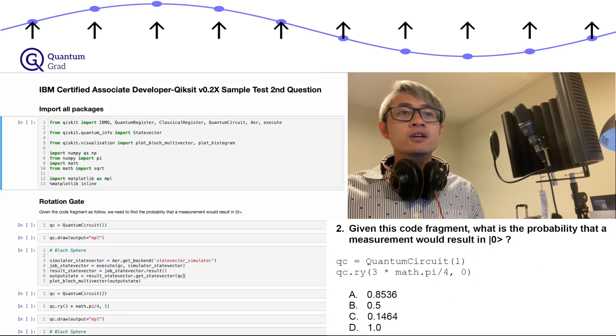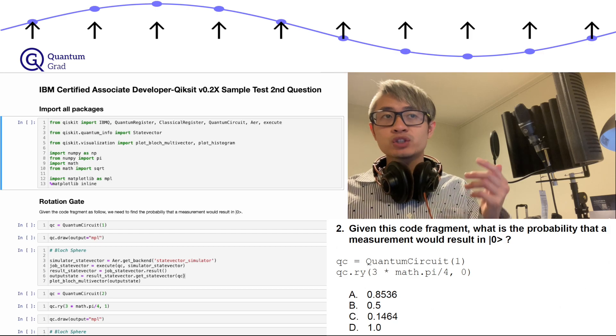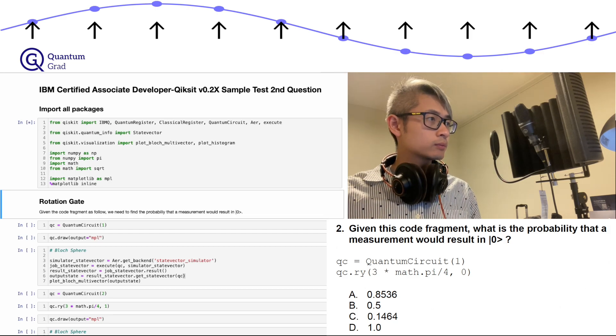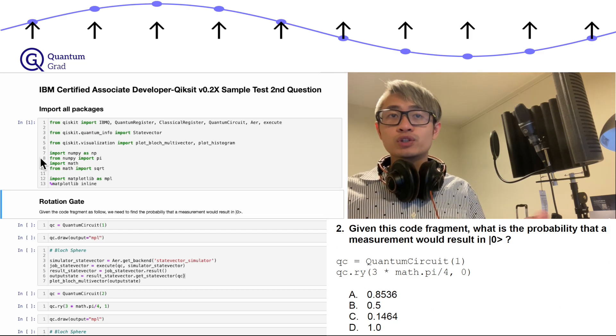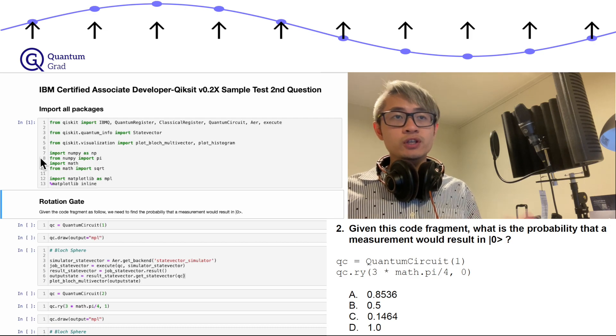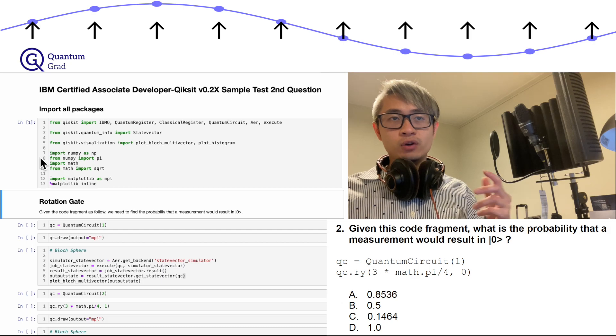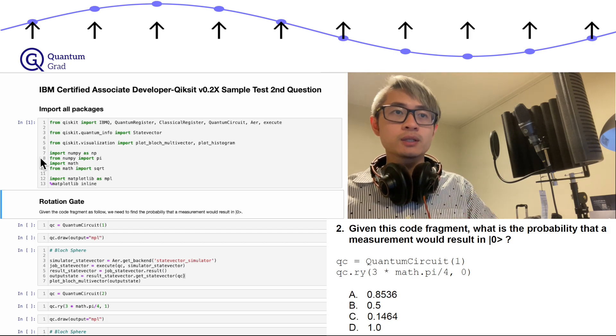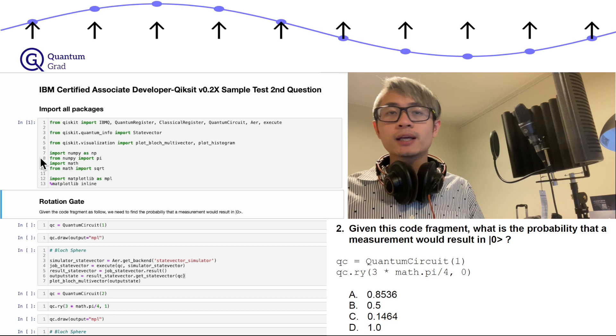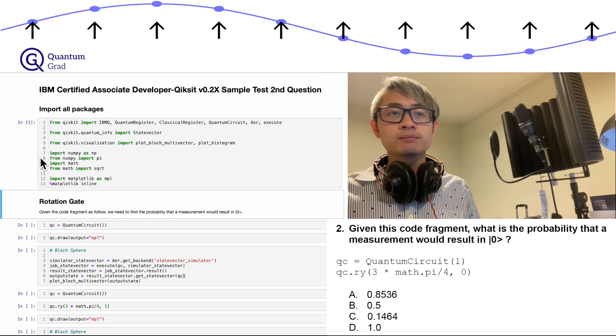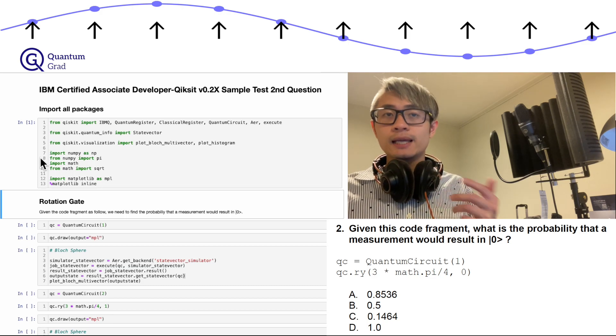First of all, let's run the import package by pressing shift enter. This question is about rotation gates. Let's focus on the first code: qc equals quantum circuit one. We have a quantum register with only one qubit. Now we can visualize the circuit by calling qc.draw output mpl to show it in the matplotlib style.